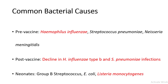The common bacterial causes of meningitis have shifted significantly over time, largely due to the widespread use of vaccines. Before the introduction of vaccines, bacteria like Haemophilus influenzae type B (Hib), Streptococcus pneumoniae, and Neisseria meningitidis were the leading causes. With vaccination programs, Hib and Streptococcus pneumoniae infections have declined dramatically. Nowadays, Neisseria meningitidis remains a leading cause, especially in older children and teenagers.